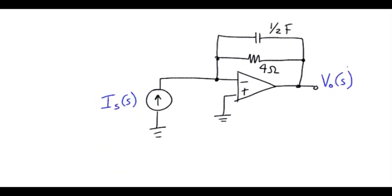So there's the S-domain input and output quantities. Of course, the resistor stays the same. The capacitor is 1 over Cs. C is one-half. So one over one-half means it looks like two. So the impedance for the capacitor is two over S.